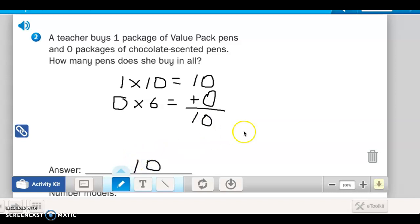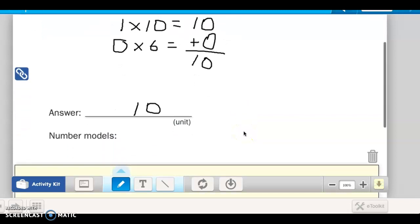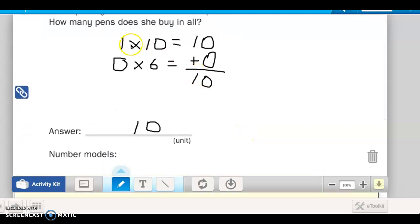Ten. So your answer would be ten. And your number model would be one times ten equals ten. Zero times six equals zero. And then ten plus zero equals ten. So write those number models. Notice the s in number models. So you can have more than one number model.